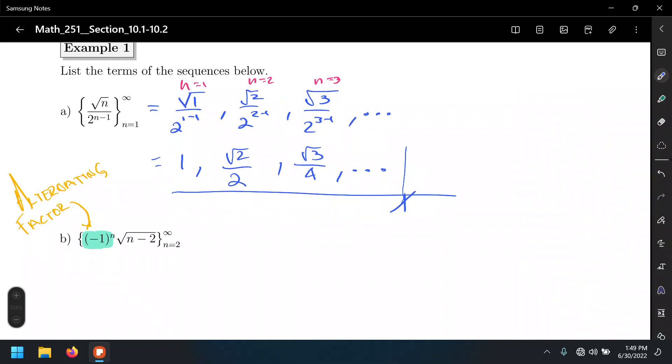Be careful here, because in this case, we're not starting our sequence at N equals 0 or 1. We're starting it at 2 in this case. So, this is negative 1 to the 2nd times the square root of 2 minus 2, negative 1 to the 3rd, square root of 3 minus 2, negative 1 to the 4th, 4 minus 2.